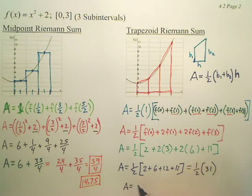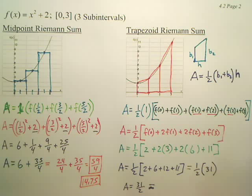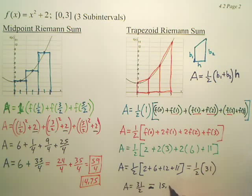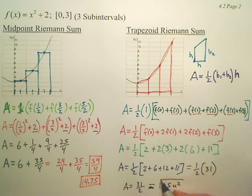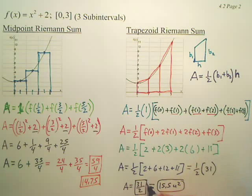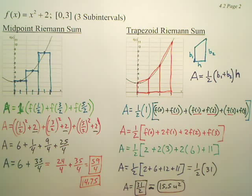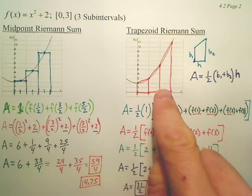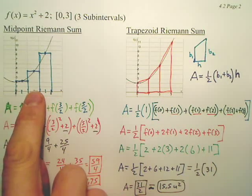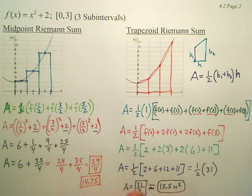So my area is 31 over 2, which equals 15.5. Either of these work. Are these close? Yeah. Again, this usually is the most accurate. This is the second most accurate. The left and right are kind of stupid, but you still got to do them.